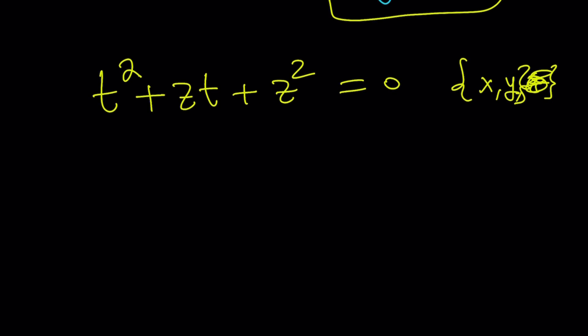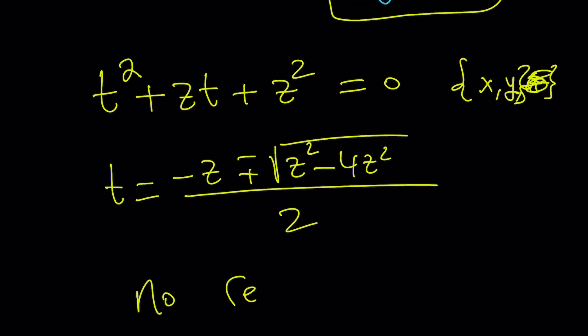What are the roots though? You can solve it using quadratic formula. Negative B plus minus the square root of B squared minus 4AC. It's like, what? There are no real solutions, obviously, because this equation does not have real solutions. So that brings us to the end of this video.